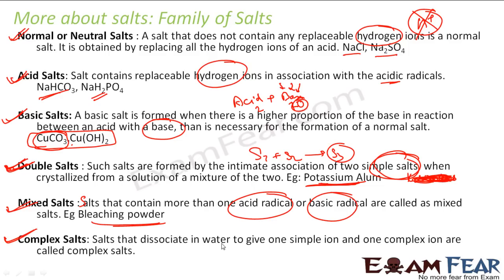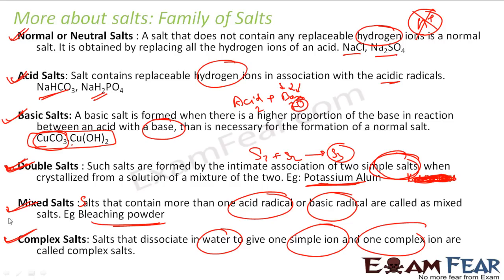A complex salt is a salt that dissociates in water to give one simple ion and one complex ion. That is called a complex salt.